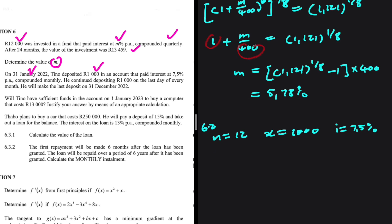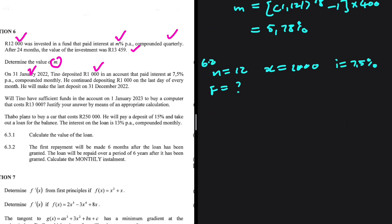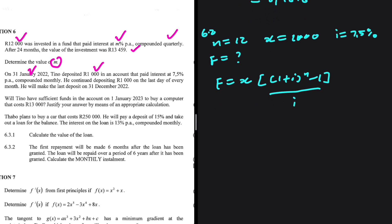We want to find how much money he'll have at the beginning of the following year. This is a future value calculation because we are saving money and making monthly contributions. The future value formula is: FV = x × [(1 + i)^n − 1] / i.